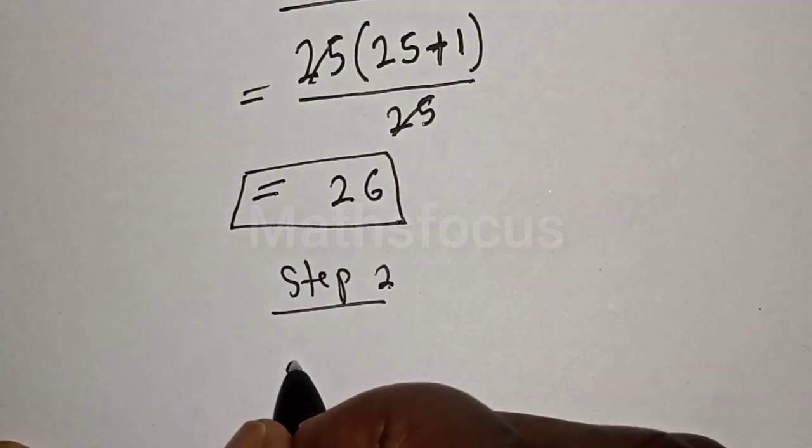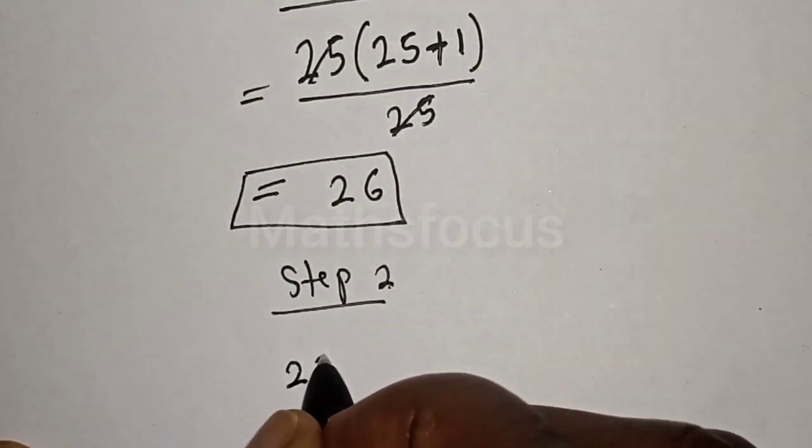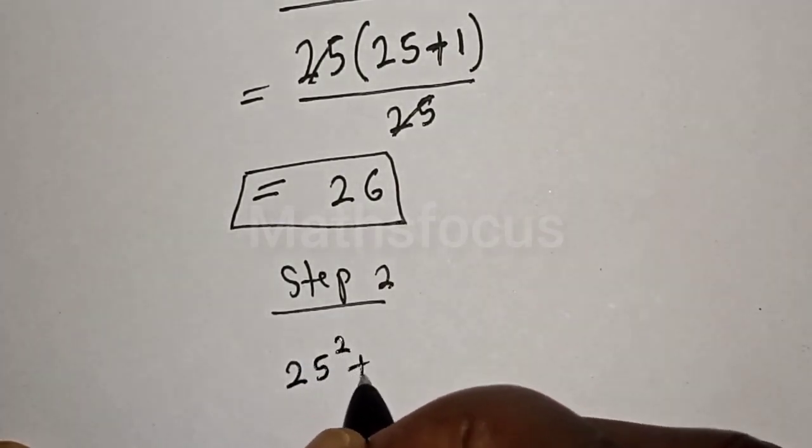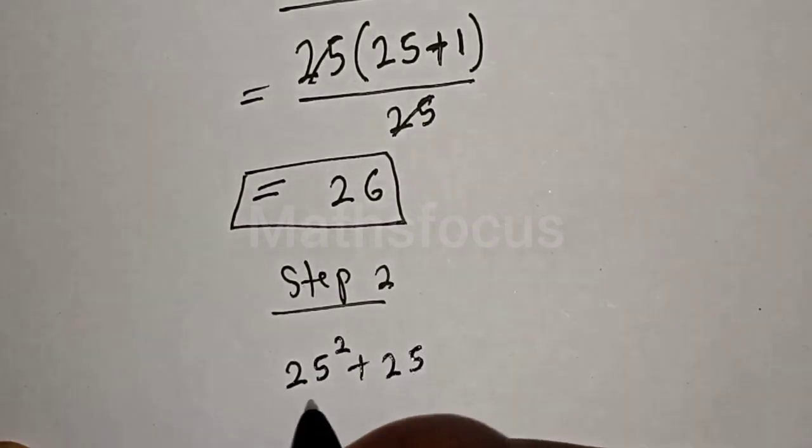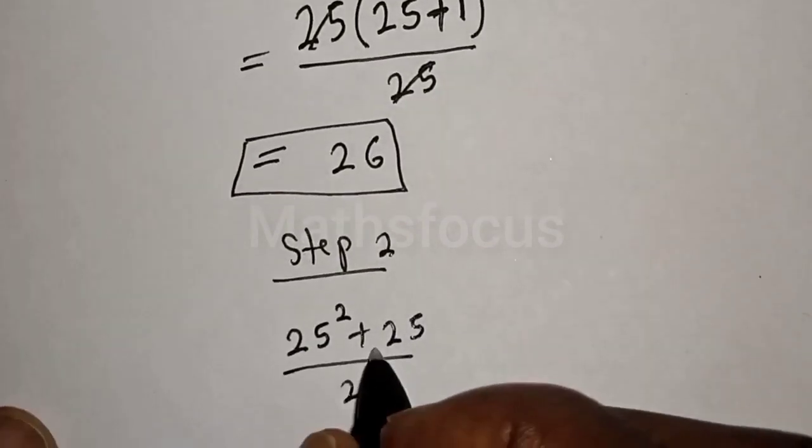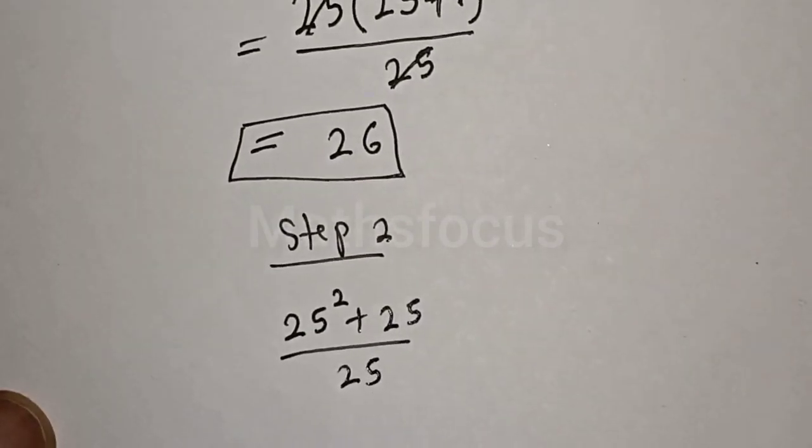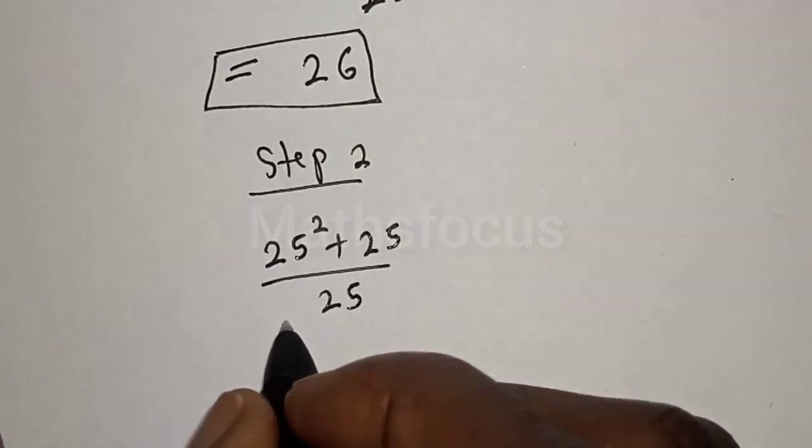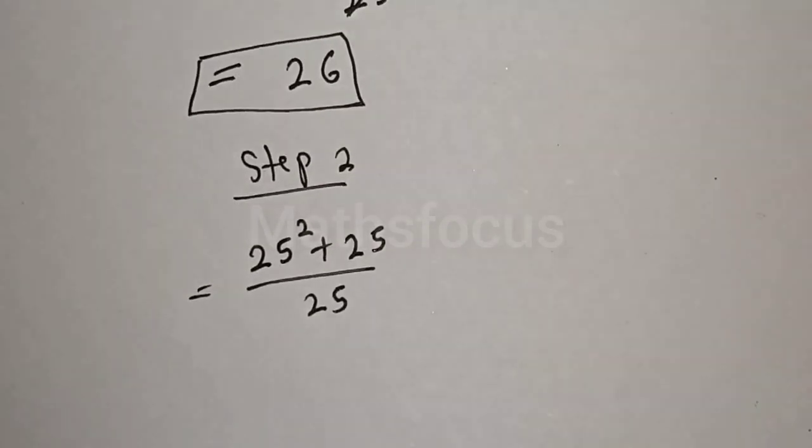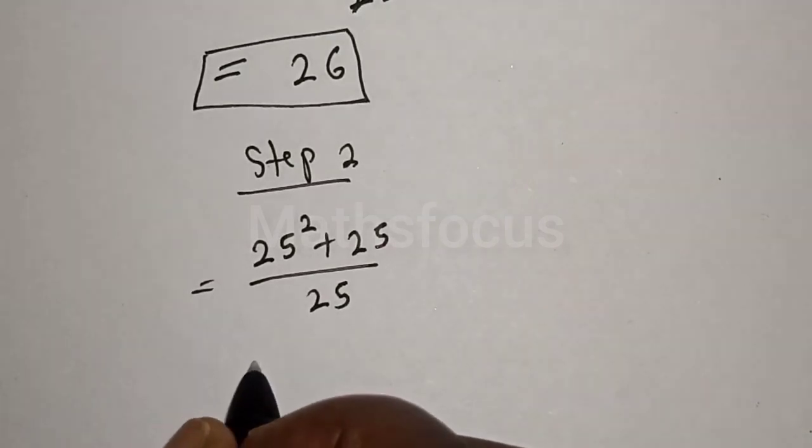We have 25 squared plus 25 over 25. Then let's split this. And this is equal to 25 squared over 25 plus 25 over 25.